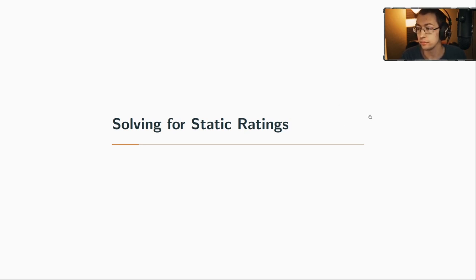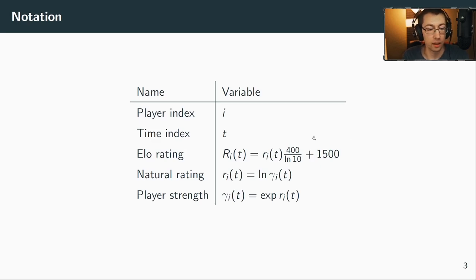So now let's first... I just saw the comment that Lichess uses Glicko, not Elo. So for static ratings, let's first see how Bayesian Elo works. This is a basic rating system that is like the precursor to whole history rating. We will use in this presentation most of the time not the Elo rating but natural rating and player strength because it's easier to calculate. Natural rating is the same as Elo rating except for a constant that you multiply and add, and player strength is just the exponentiation of that.